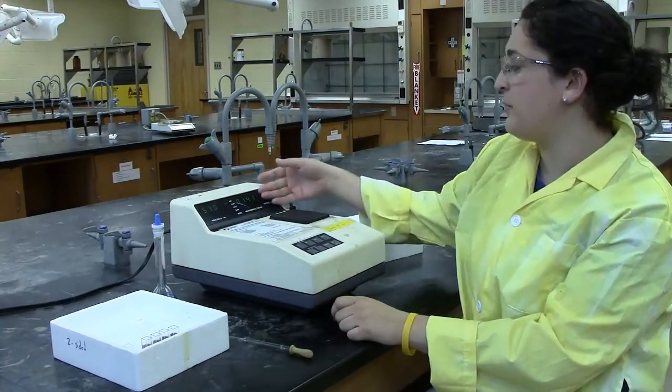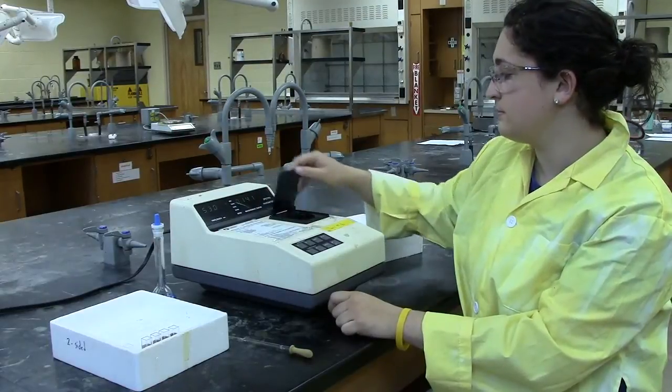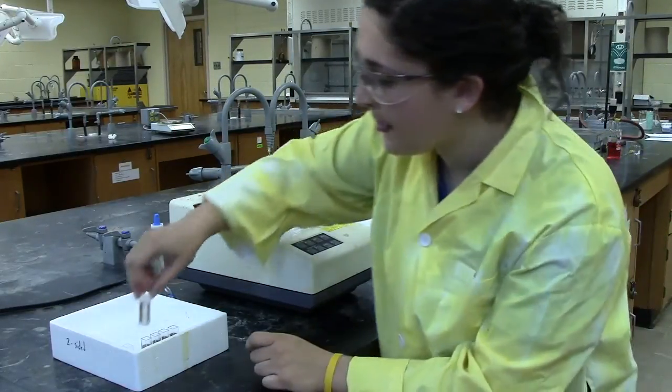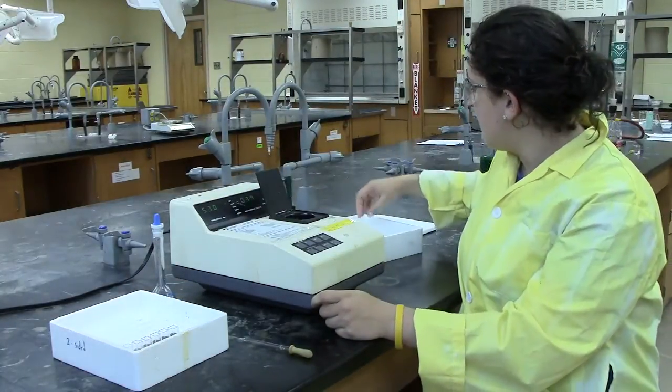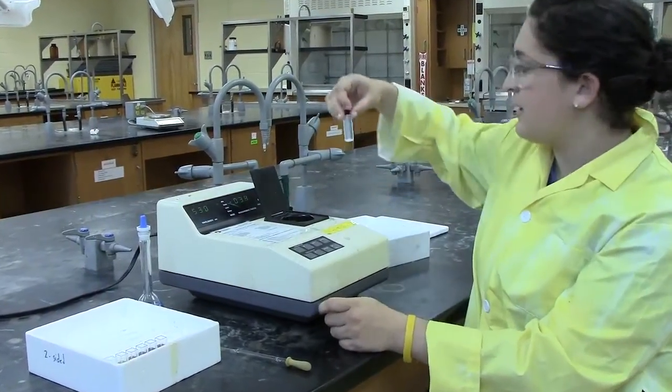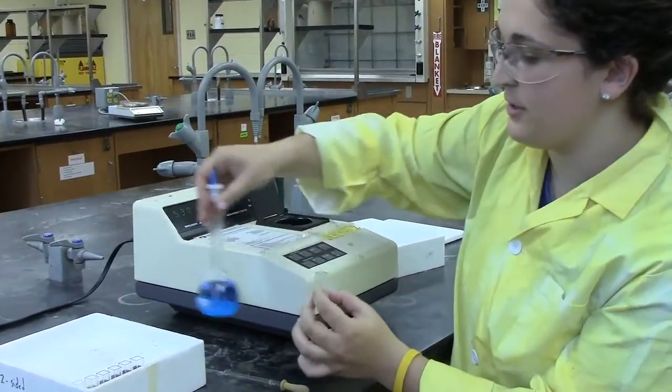The reading will appear up here, which you can record. After you have done all your standards, you can then do your unknown. You can get a new cuvette, also holding the blurred side, and fill it up with your unknown.